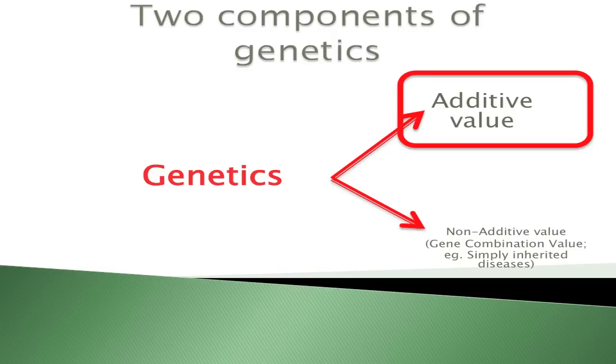There are two pieces of genetics, and EPDs represent one of them. One is additive value — that's EPD. The other is non-additive value, also called gene combination value. Think of it this way: you pick the best males for fiber diameter or staple length and use them in your breeding program. Who you mate that male to, and how those genes combine, is that non-additive value. Because it's the way genes pair in the individual, it's not passed on to the next generation. So we focus on the additive value.